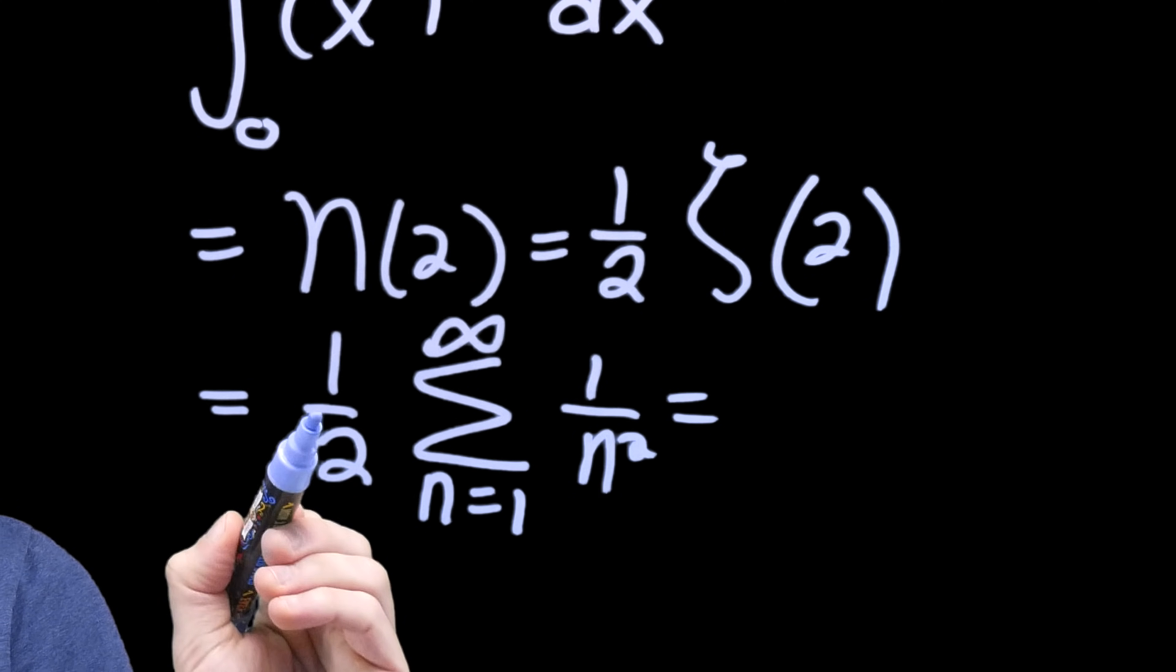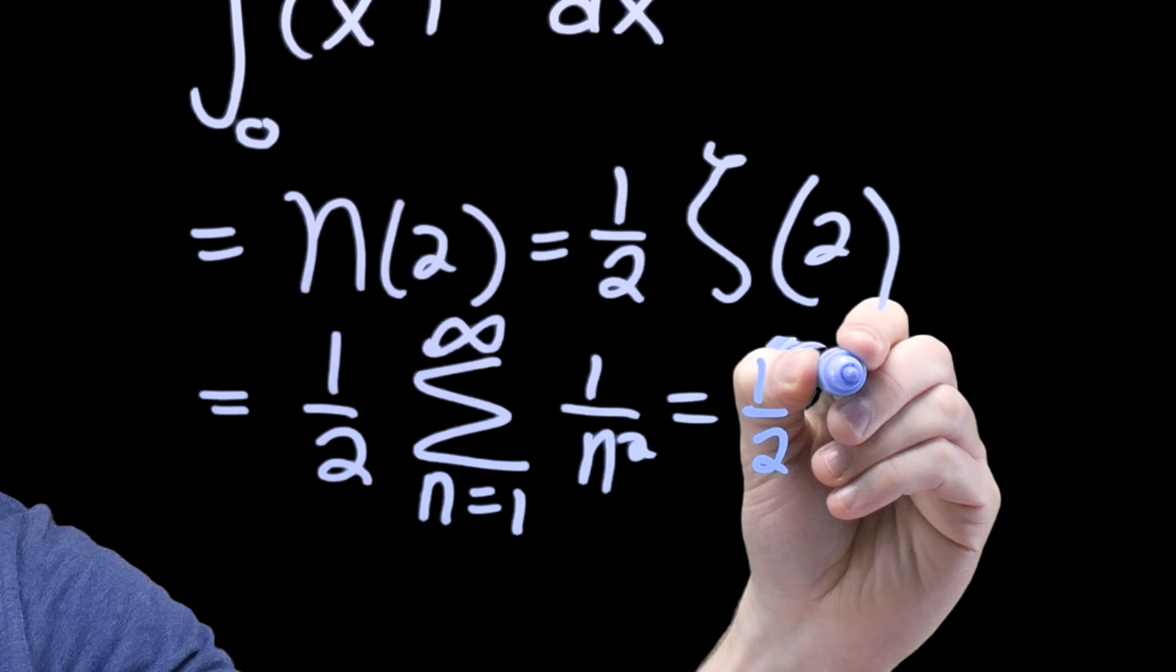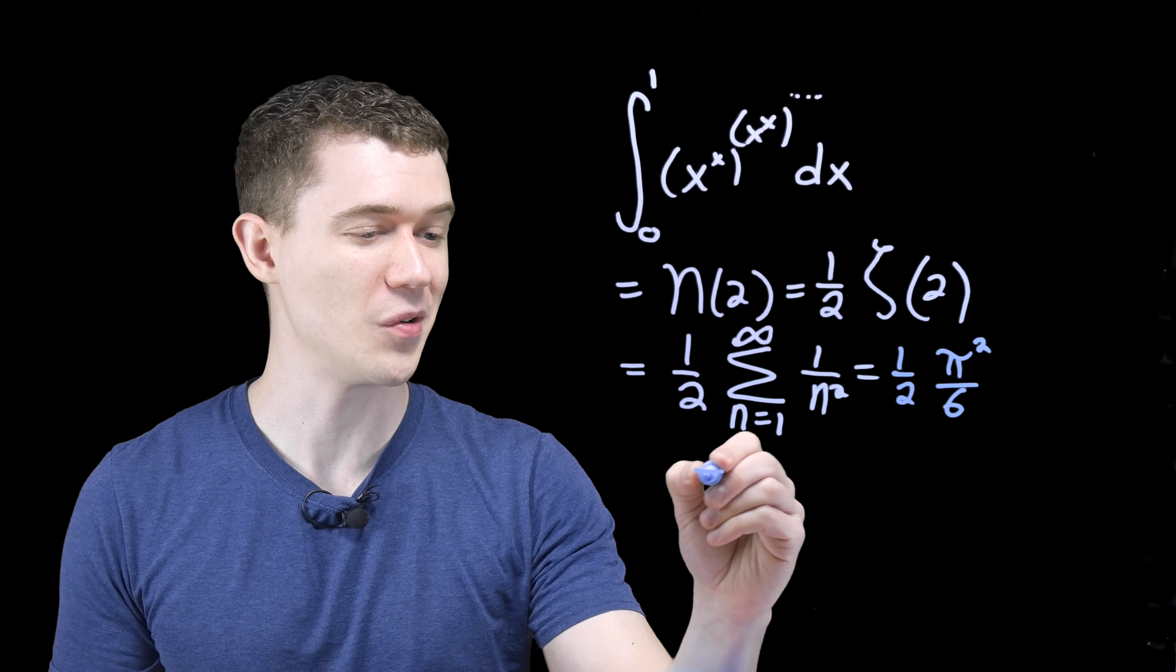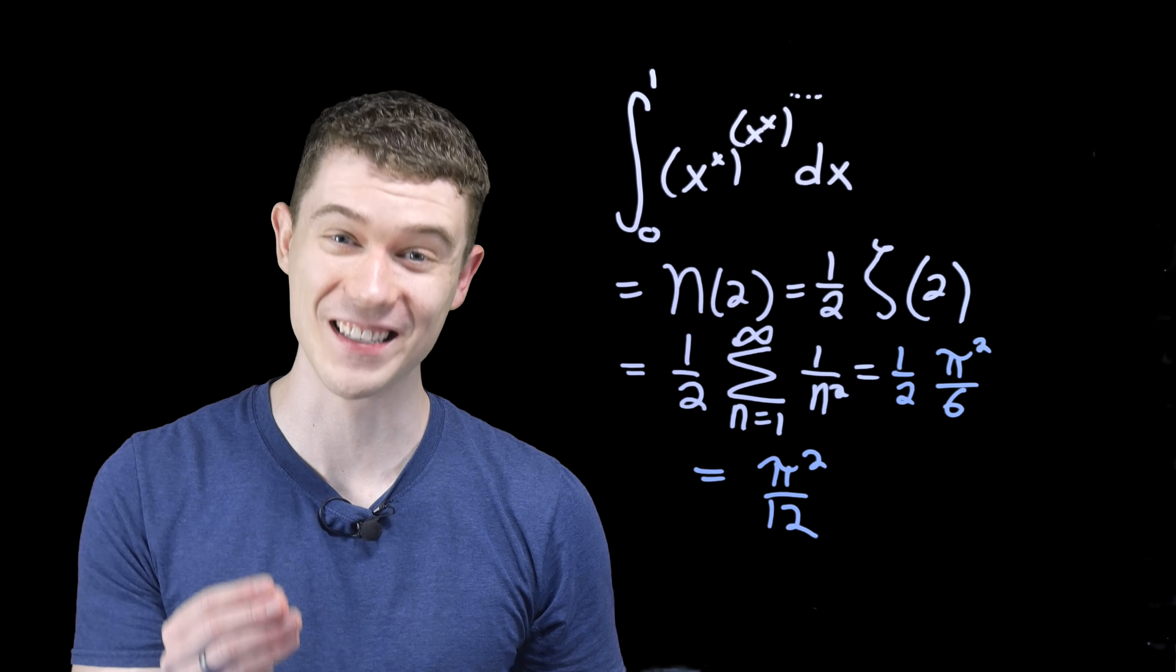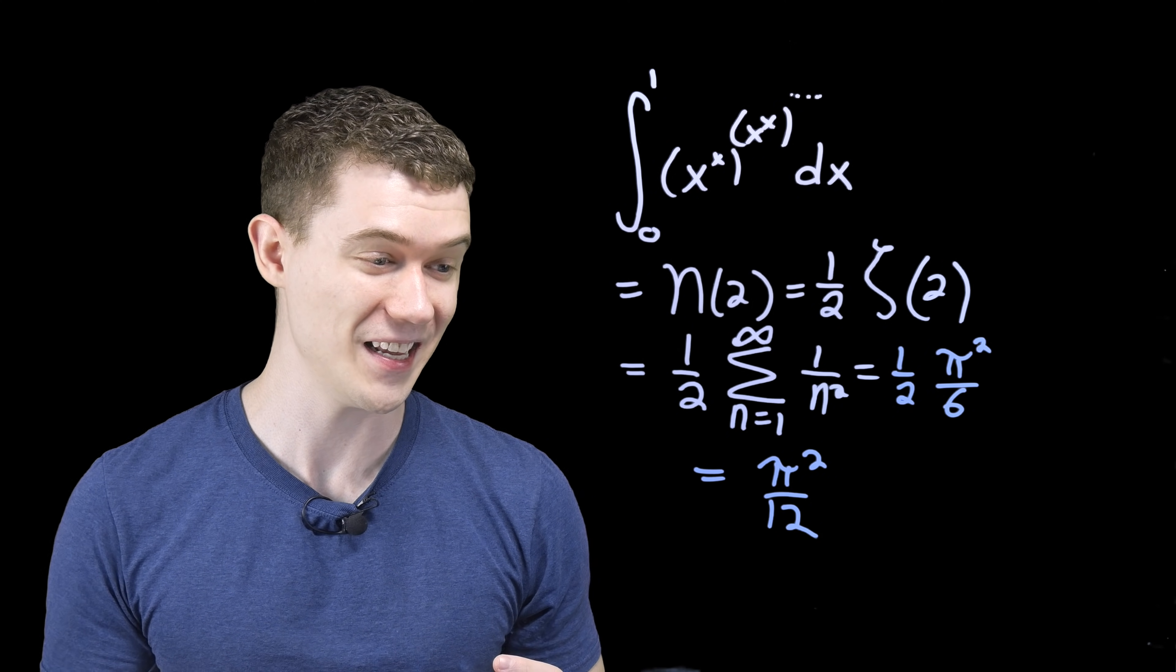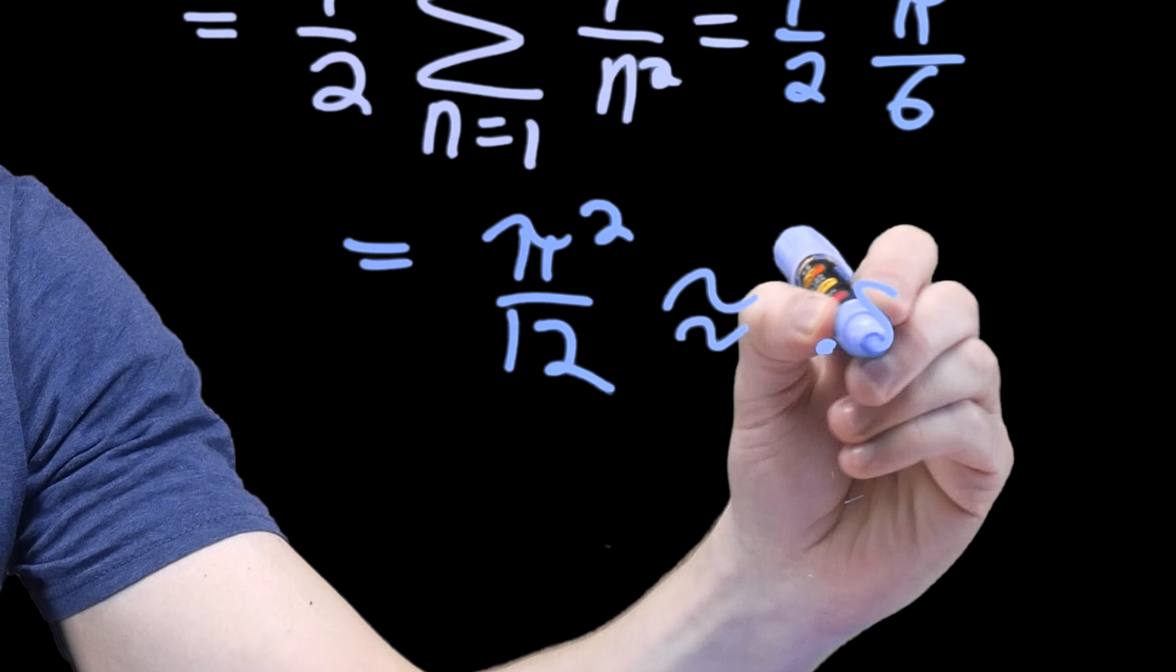One over n squared. This is the zeta function at two. This is a famous, well-known result. One over n squared from one to infinity. This is pi squared over six. And so our final answer is pi squared over 12. What an amazing result. So much went into this. It's hard to believe that this is the crazy answer that we got. If you're looking for the decimal representation, this is about 0.822.